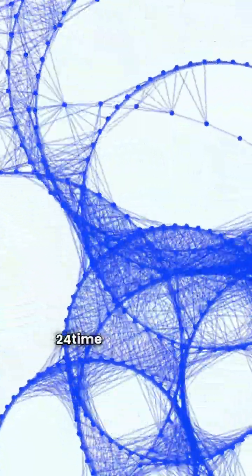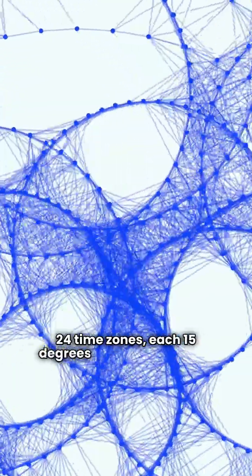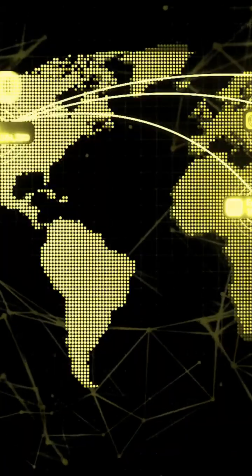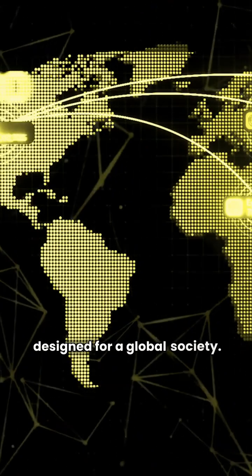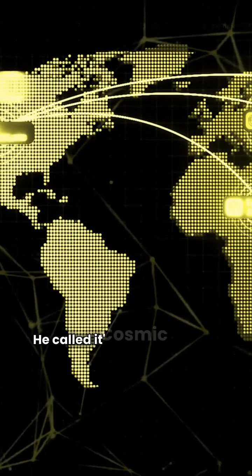Divide the world into 24 time zones, each 15 degrees of longitude apart. A system rooted in logic and designed for a global society. He called it Cosmic Time.